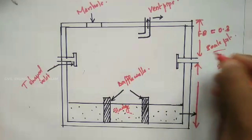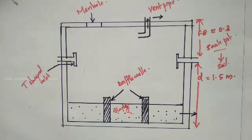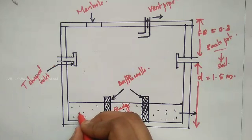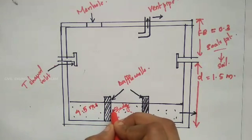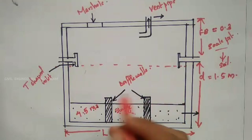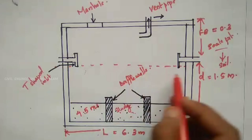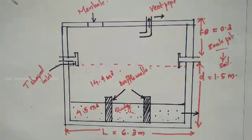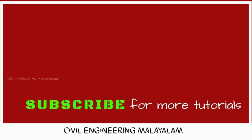In the figure, the depth of the tank is shown as small d equal to 1.5 metres. The sludge deposit is shown with a total volume of sludge deposited of 4.5 m³. The length of the tank is 6.3 metres. The volume of sewage is 14.4 m³, giving a total tank capacity of 18.9 m³.